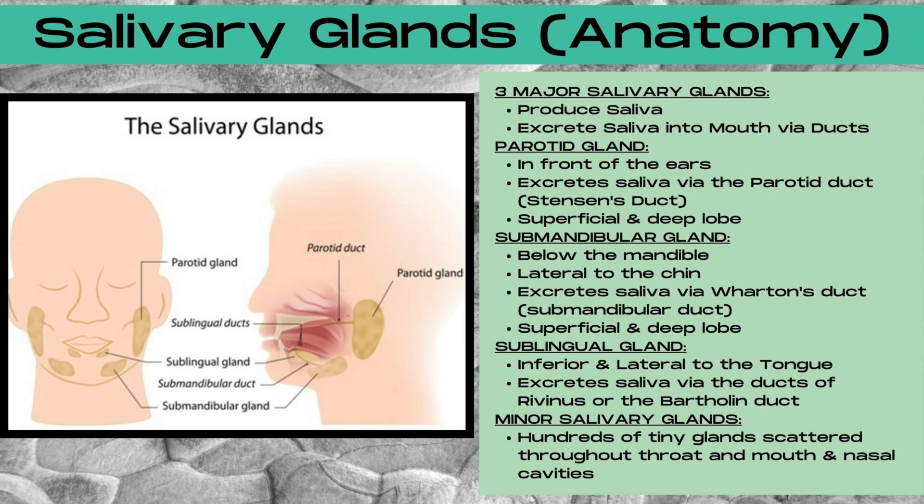The first one is the parotid gland, located in front of the ears. It excretes saliva via the parotid duct, also known as Stinson's duct. It has both a superficial and a deep lobe.